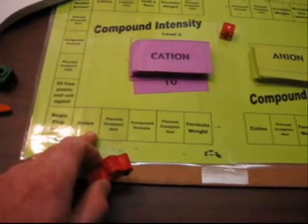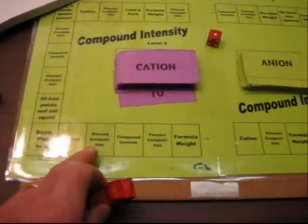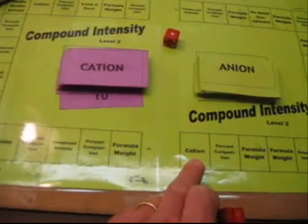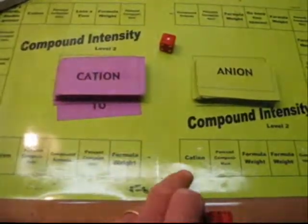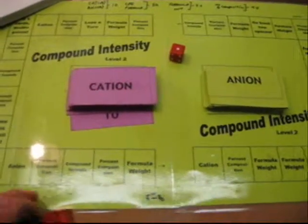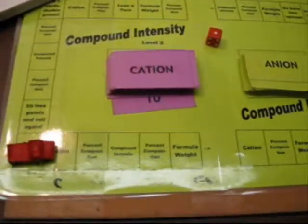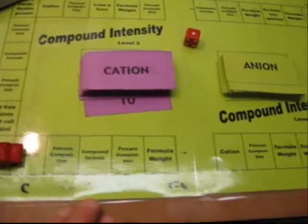Let's look at some of the other spaces now that a student or team might land on. In addition to the anion space, there's also cation spaces. Again, they would just draw a cation card and identify the symbol and charge for the cation.